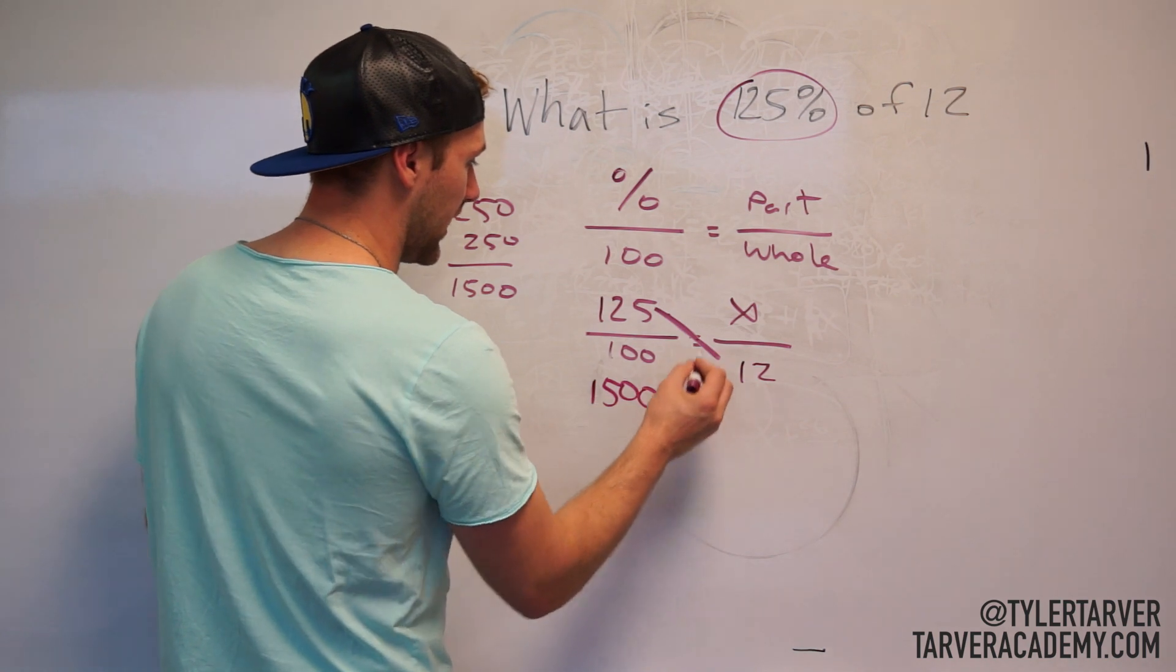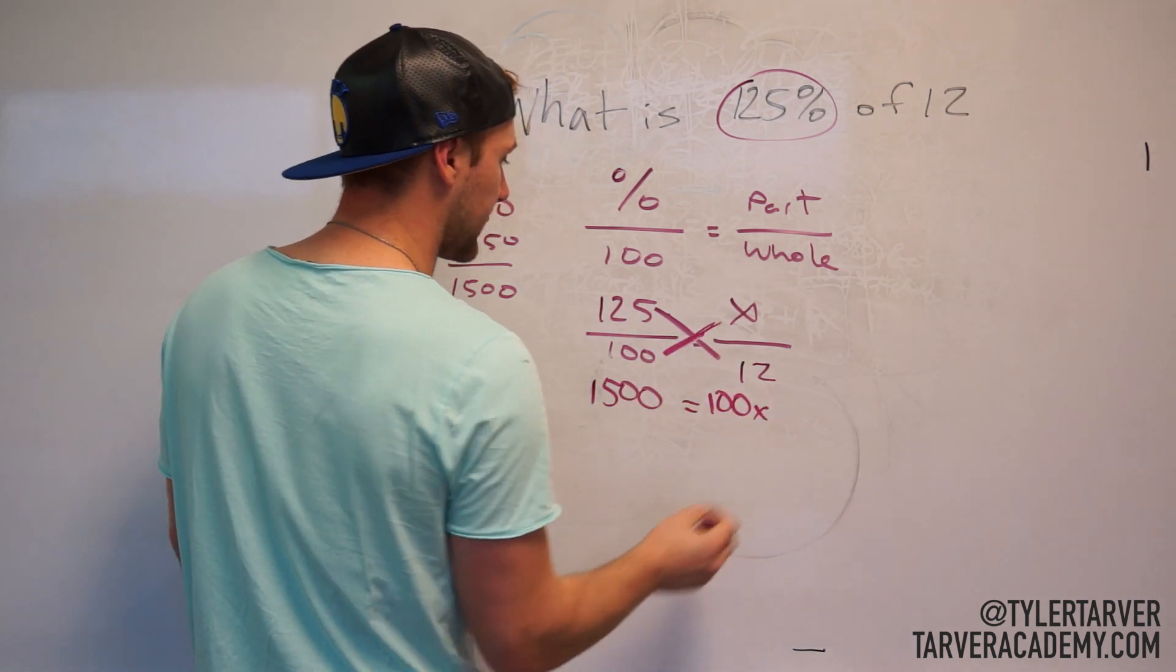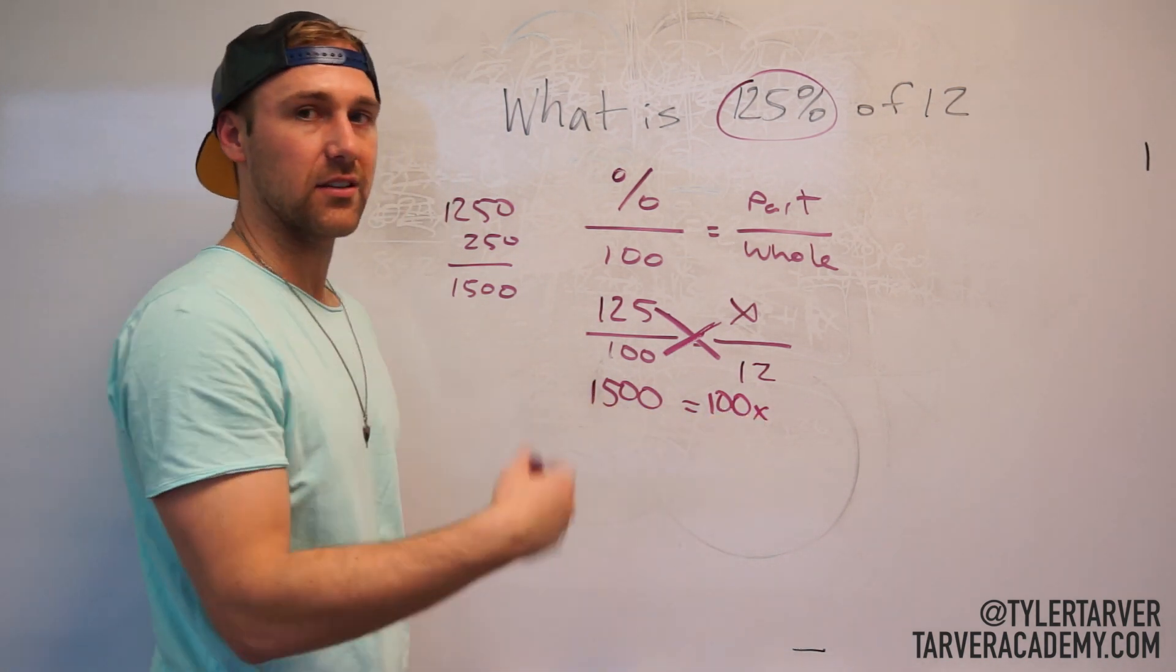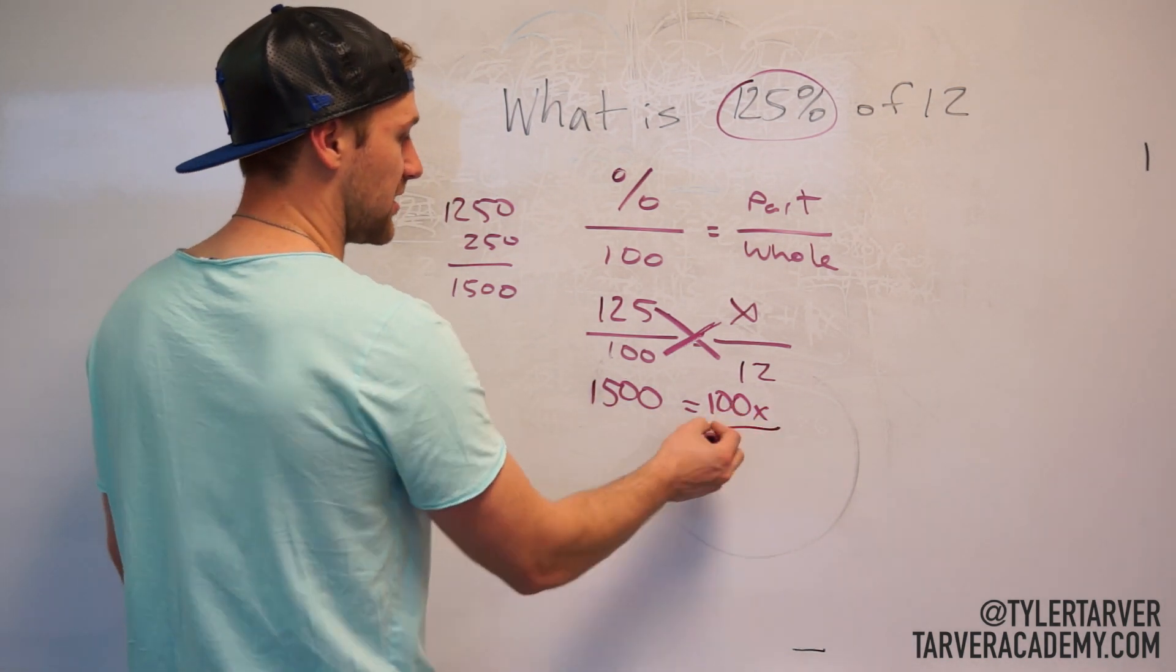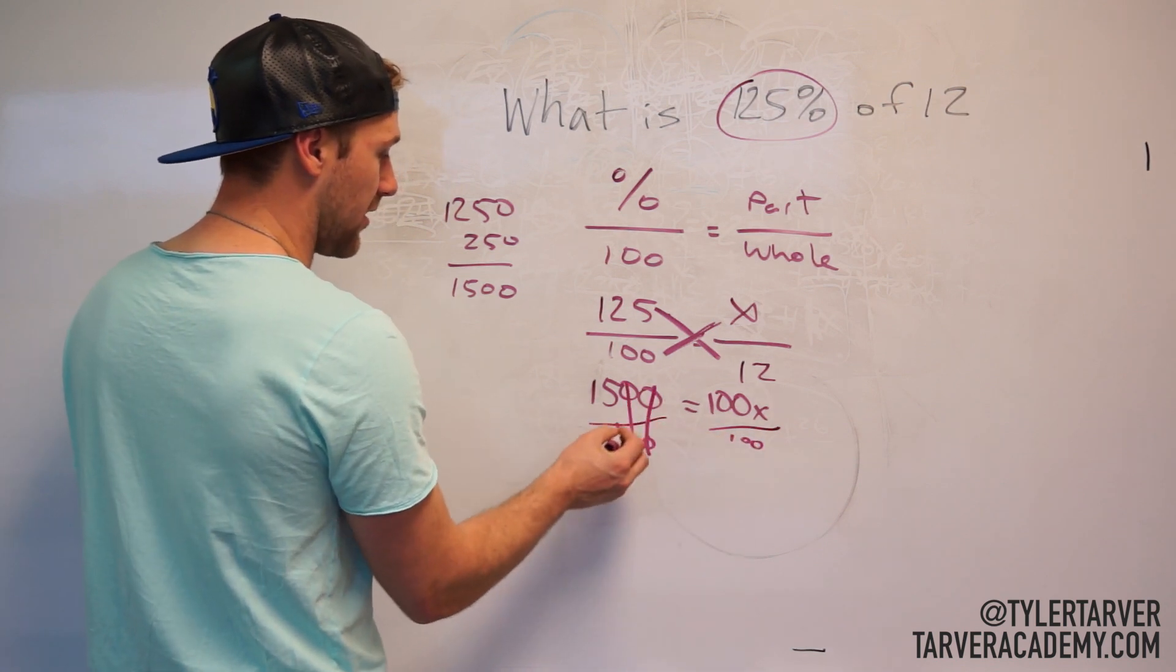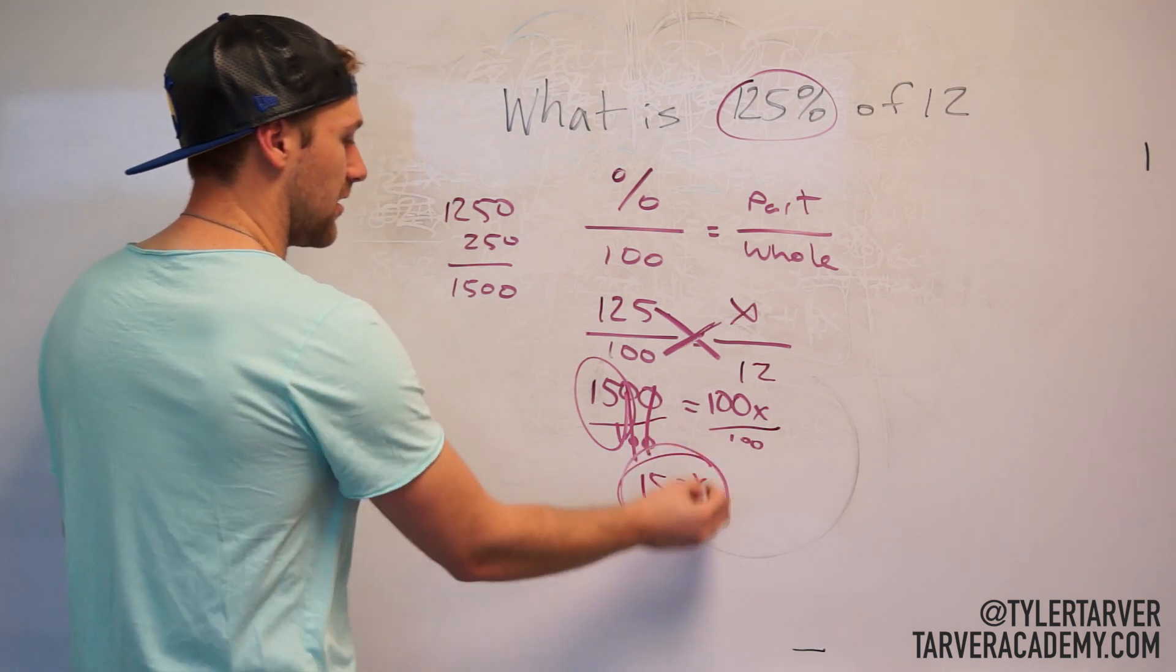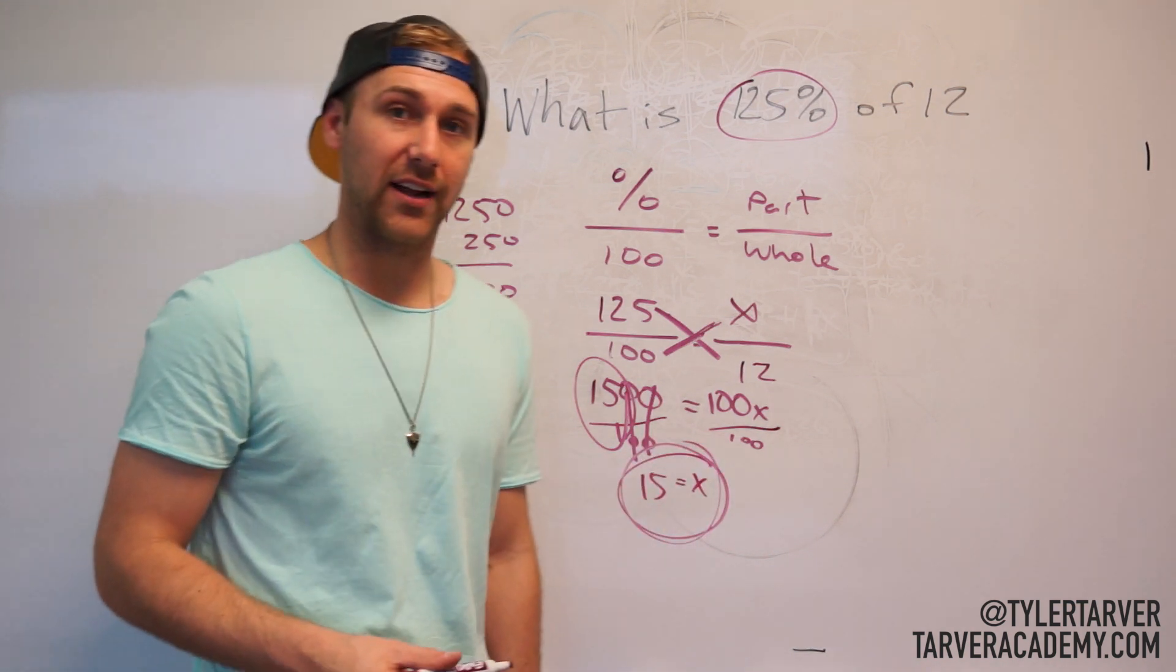So 1500 - cross multiply those - that's 1500 equals, and then I cross multiply those, it'd be 100X. Then I divide because it's 100 times X, I do the opposite of multiply which is divide by 100. I can just cut out that zero and that zero, and I'm left with 15 over 1 which is 15, and that's our answer.